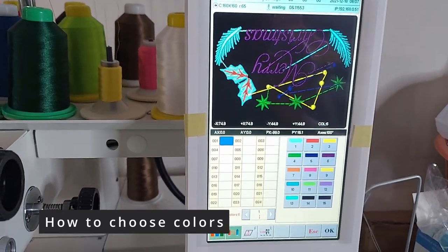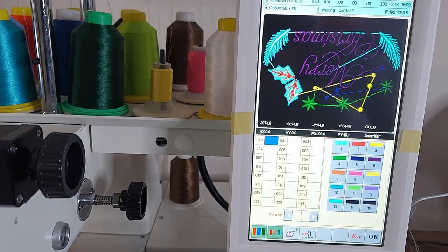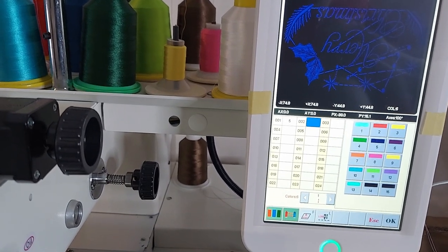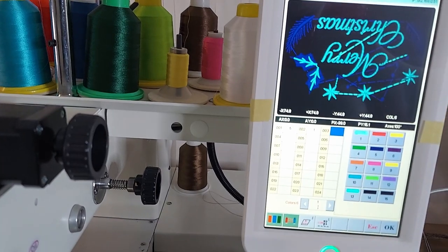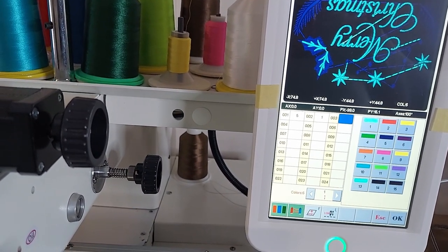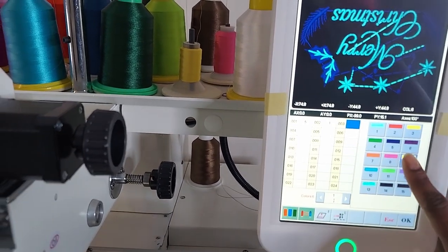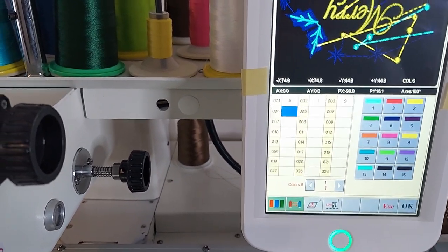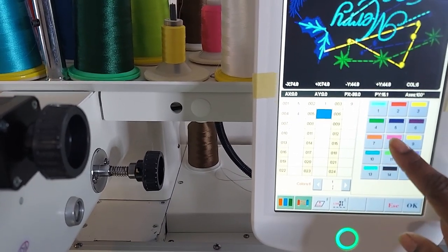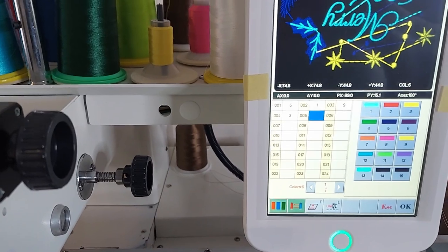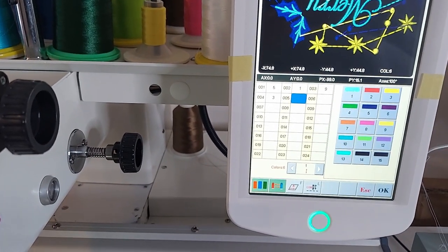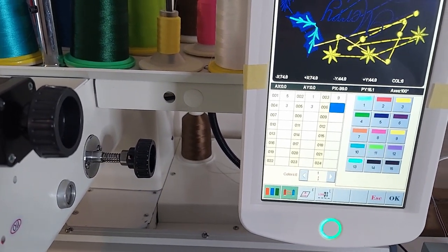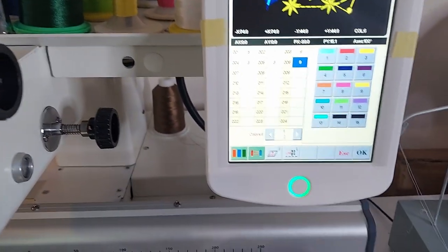Now it's time to choose or change colors. To change the colors, this is where you go, this is where you press. So with my needle two, I'll choose color one. Needle three, I'll choose color nine. Needle four, I'll choose color three. Needle five, I'll use color three again. And needle six, I'll use color nine. When you're done, press OK.